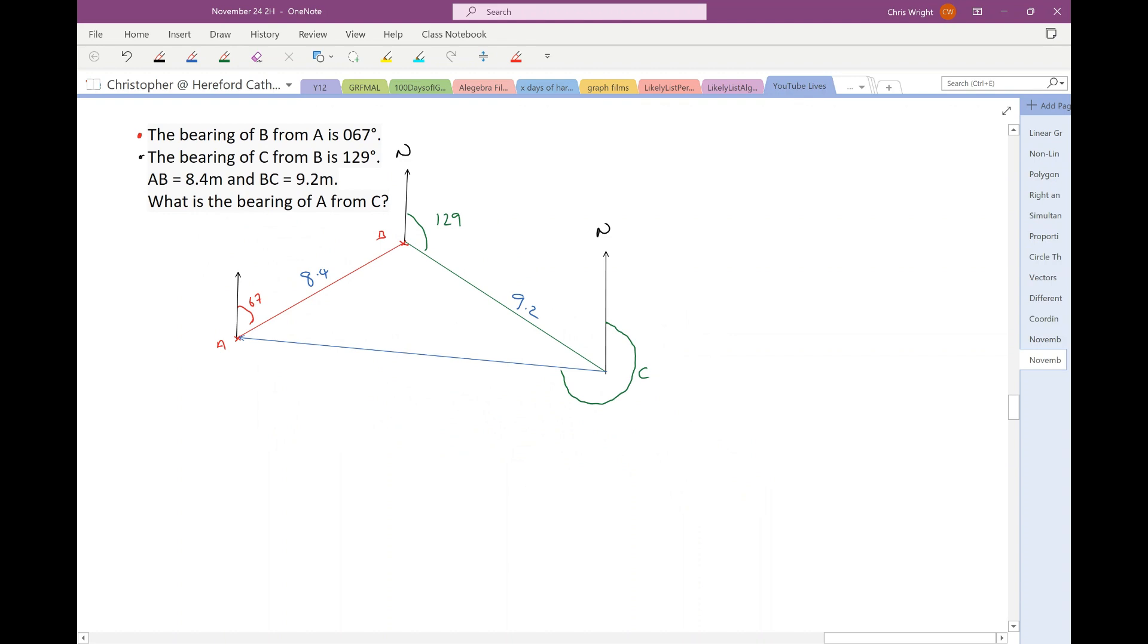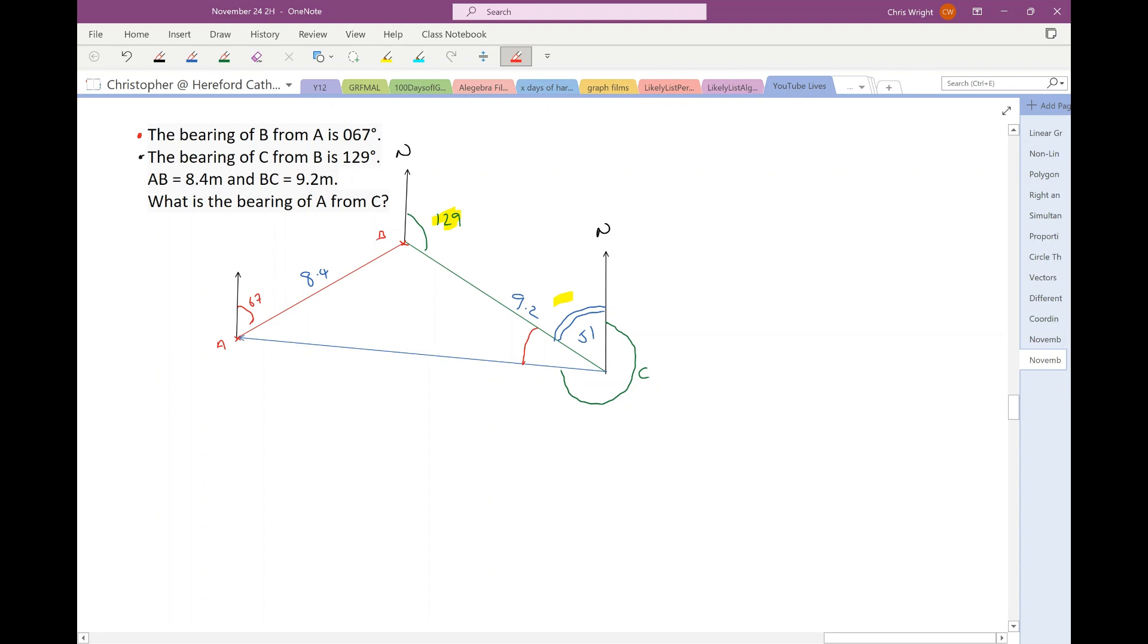Right. Now, we've drawn out the diagram. We can have a go. Well, the first thing that I notice is that this angle here is allied to the 129. They're both going to add up to 180, aren't they? Okay, so 180 minus 129 gives me 51 here. So, now I'm just being asked to find this red angle here, and then I can subtract the red angle and the 51 from 360.